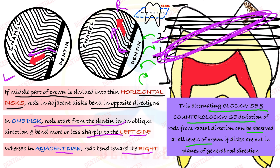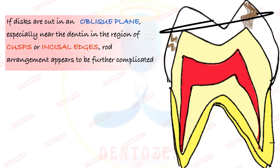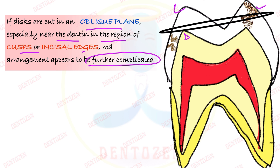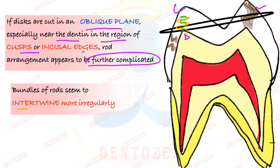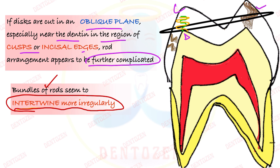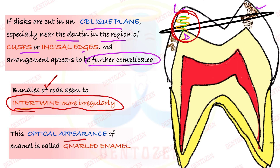When a section is cut in an oblique plane, the arrangement appears even more complex. Especially near the dentine in the region of cusps and incisal edges, rods are not only bending in the transverse and vertical planes, but are also intertwining — turning and bending around each other. This intertwined appearance of enamel rods when seen under the microscope is given the optical term gnarled enamel, which is a very important term in enamel structure.